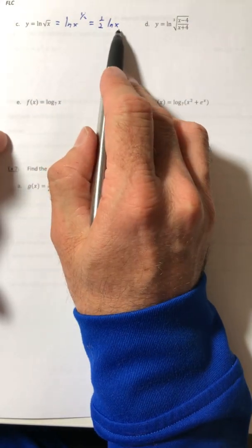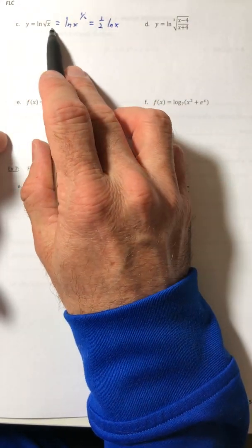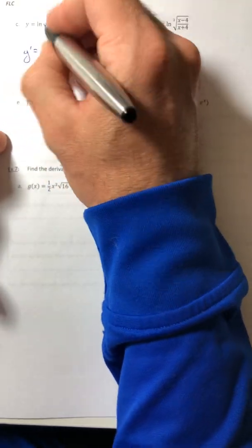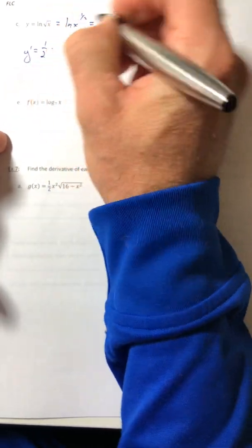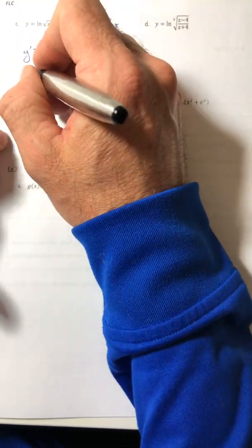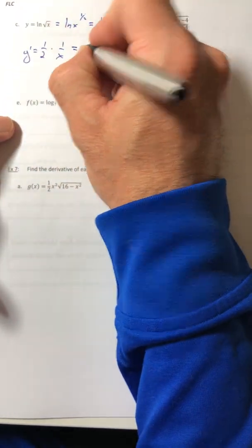And now this derivative is a lot easier to do than that one. So the half just stays. The derivative of ln of x is just 1 over x. And so it's just 1 over 2x.